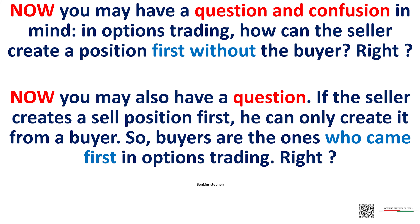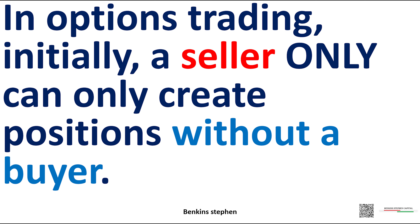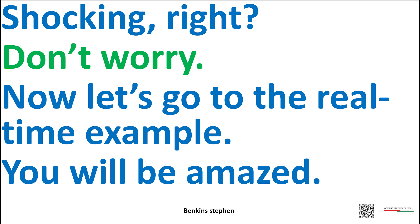Now you may have a question and confusion: in options trading, how can the seller create a position first without the buyer? If the seller creates a sell position first, he can only create it from a buyer, so buyers are the ones who came first in options trading — right? Yes, your question and confusion are correct, but the truth is different. In options trading, initially, a seller can only create positions without a buyer. Shocking, right? Don't worry — let's go to a real-time example.